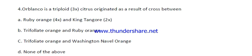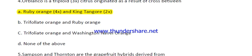Question number four: Kara Kara Franco is a triploid citrus originated as a result of a cross between which varieties? The options are: Ruby orange with King tangerine, triploid orange with Ruby orange, triploid orange with Washington Navel orange, or none of the above. The right answer is option A — Ruby orange with Dungaree.